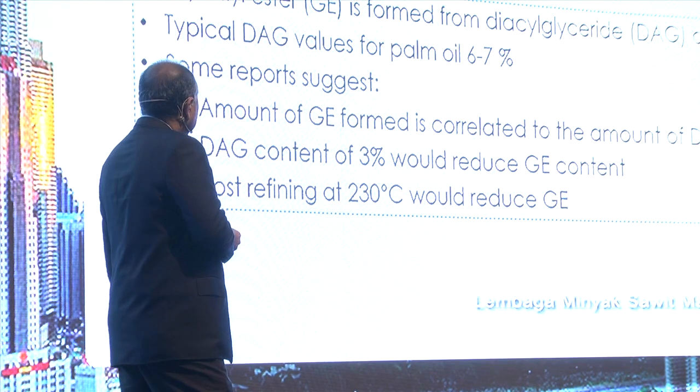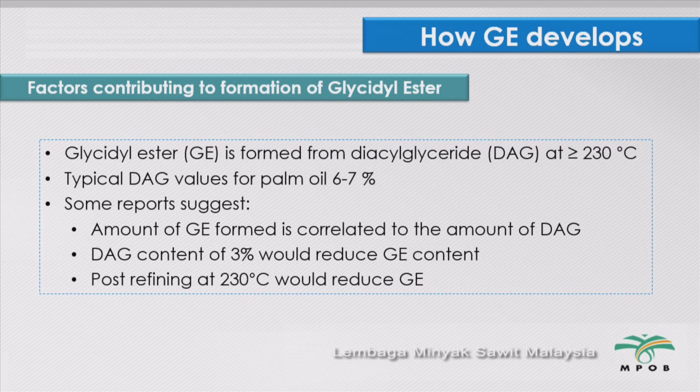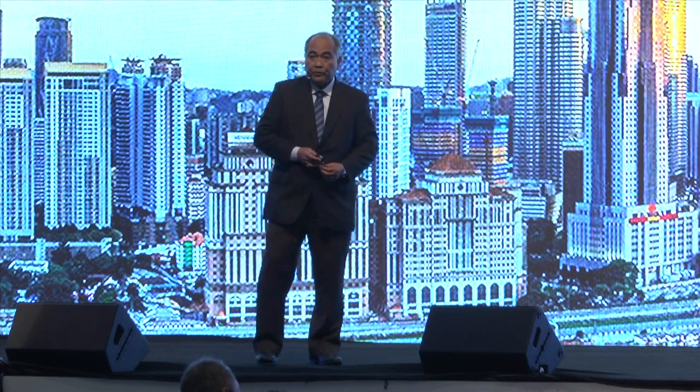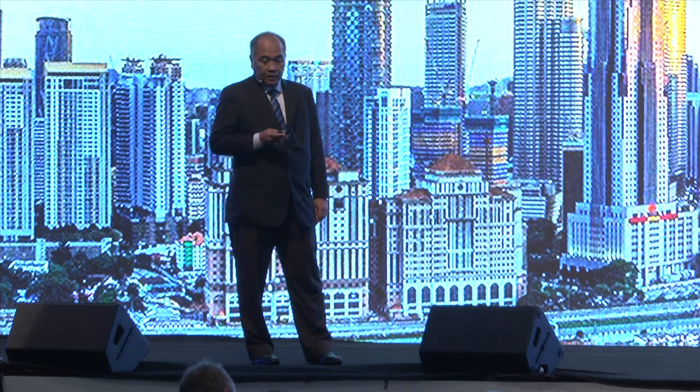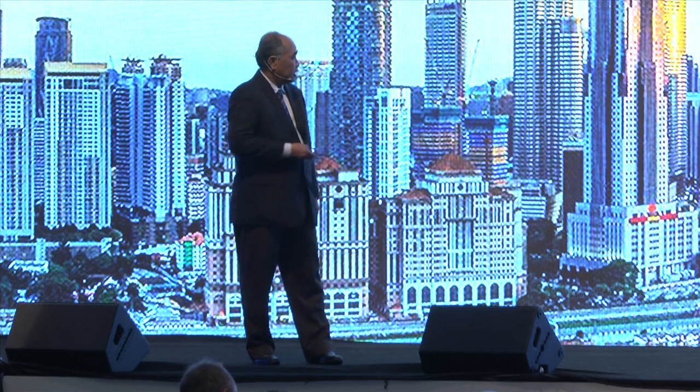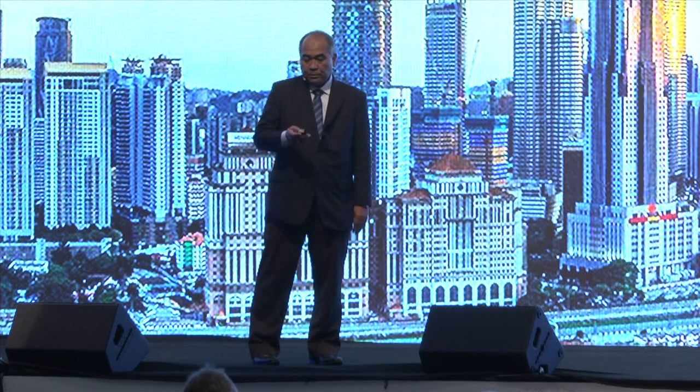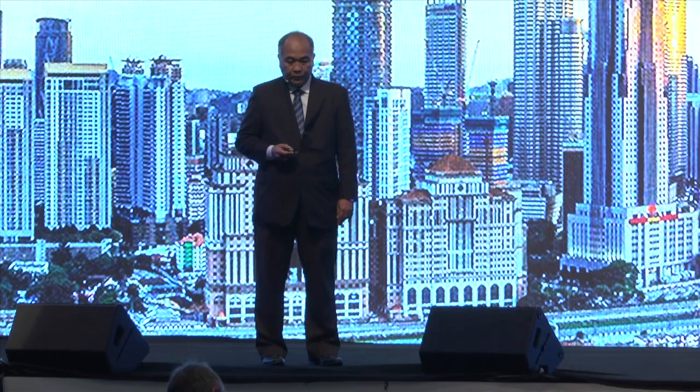Factors contributing to the formation of GE: GE is formed from DAG at above 230 degrees Celsius — actually 260 degrees, which is the norm for deodorization temperature. Typical DAG values for palm oil in Malaysia are about 6% to 7%. Some reports suggest the amount of GE formed is correlated to the amount of DAG. DAG content of about 3% would reduce GE content. Post-refining at lower temperatures around that range would also reduce GE.